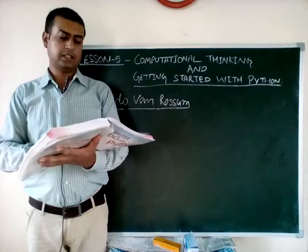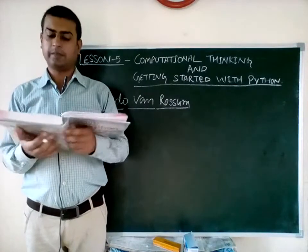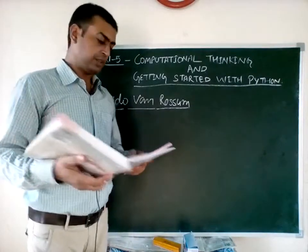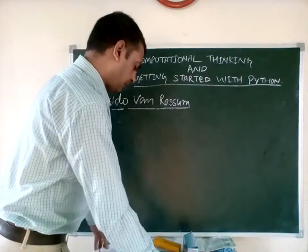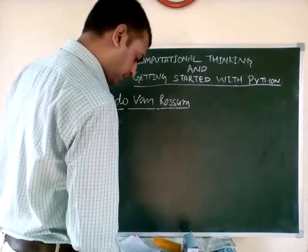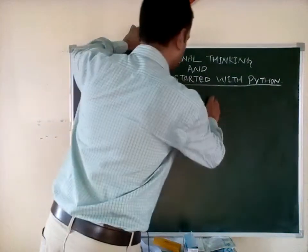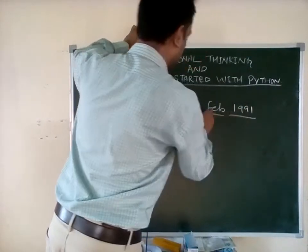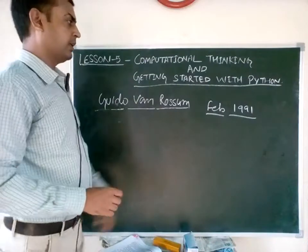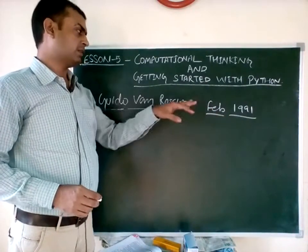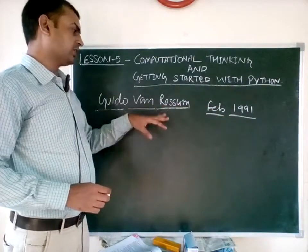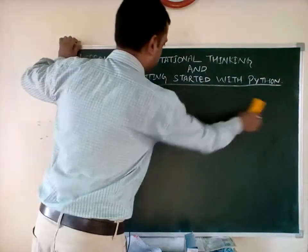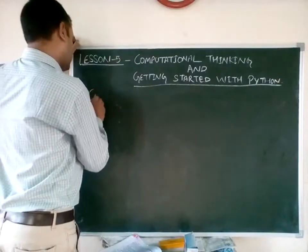In this language we will deal with the programming section and how it works. February 1991 was the year and month in which Guido van Rossum created this language. This is the main important thing. Now let's move to computational thinking.